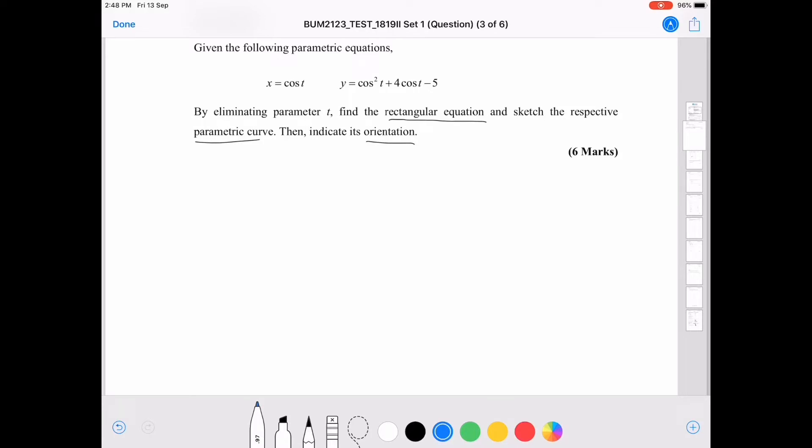First thing, find the rectangular equation. If you can see, you have cos t here and then we have cos square t here and cos square t here. Obviously, what you have to do is just substitute the x equals to cos t into the y. So, we have y equals to x square plus 4x minus 5. Okay, obviously, this is quadratic curve.